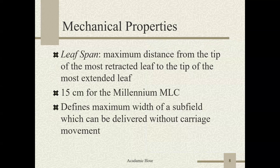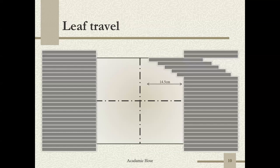The leaf span is the maximum distance from the tip of the most retracted leaf to the tip of the most extended leaf. It is 15 cm for the Millennium MLC, defining the maximum width of subfield which can be delivered without carriage movement. For the Elekta, it's 12 cm, and for the Siemens, it's 10 cm.